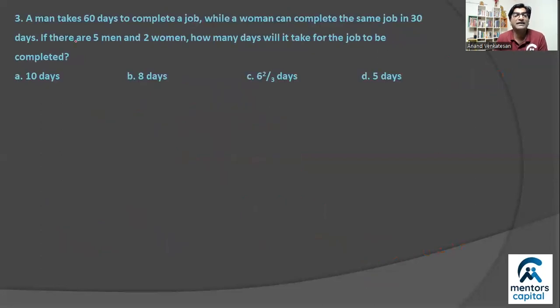Question number 3. A man takes 60 days to complete a job. A woman takes the same job, she takes only 30 days. So if we assume work as 60 units because 60 and 30 ka LCM is 60. Man's rate, remember we are using the formula work is equal to rate into time, so rate is work upon time. 60 units, if man does it in 60 days, then every day he does one unit.